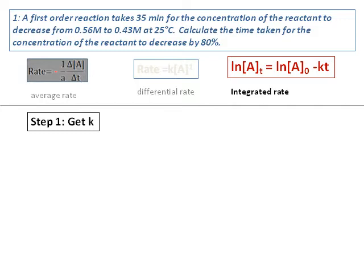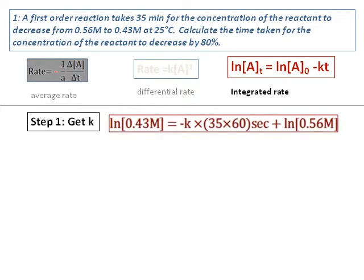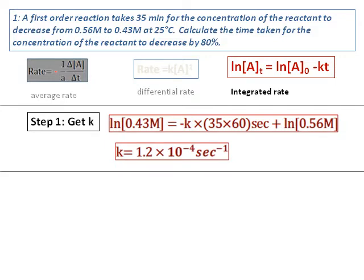In the integrated rate law, the first step is to get the value of k. The concentration of A at time t is given as 0.43. We need to find k, with time equal to 35 minutes converted into seconds, and initial concentration given as 0.56 molar. Substituting all these values, we get k as 1.2 × 10⁻⁴ s⁻¹. The unit of k as second inverse is consistent with a first-order reaction.